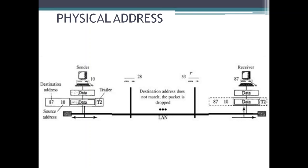In a bus topology, the frame propagates in both directions and reaches every station on the network. Any station with a physical address other than 87 drops the frame because the destination address in the frame does not match its own physical address. The intended destination computer finds a match, the frame is checked, the header and trailer are dropped, and the data part is delivered to the upper layer.